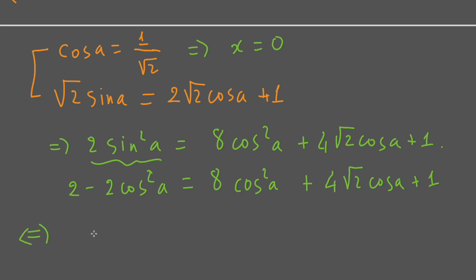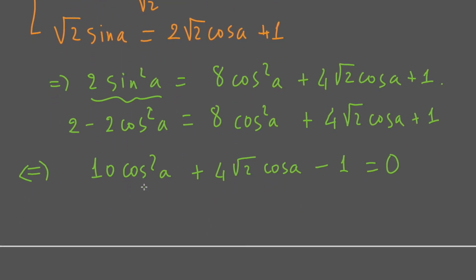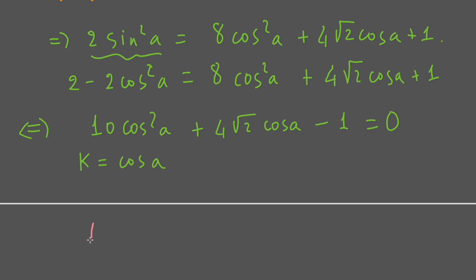Now you will see something resembling a quadratic equation equal to 0. To be clear, we introduce another substitution: let k equal cos a. That equation becomes 10k² plus k minus 1 equal to 0, and from this quadratic equation we can easily find the roots.